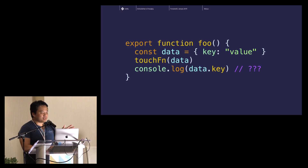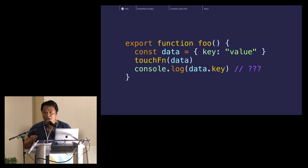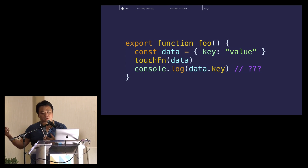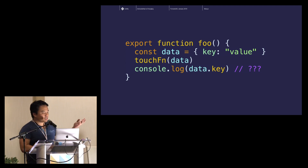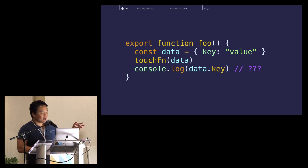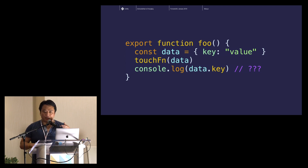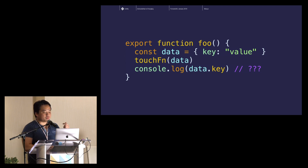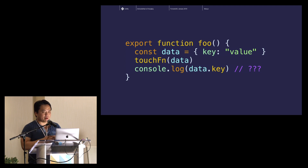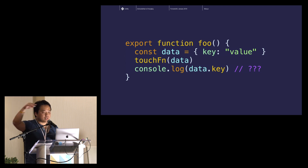The reason we want all of that is really to answer this fundamental question. Here I have a JavaScript function. I have an object. It gets passed into a function. And then I have to do something with the object later on — like render it, log it out, whatever. And the question is: what's in that object after passing it through? You can't know unless you follow the rabbit trail all the way through the source code of the touch function.